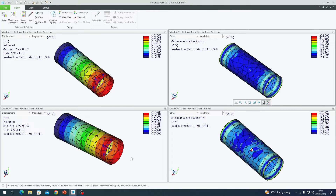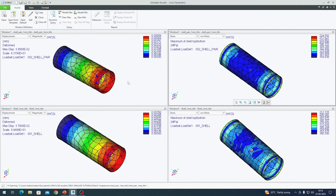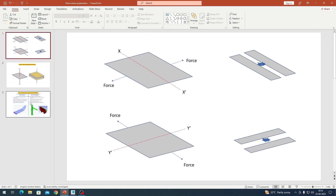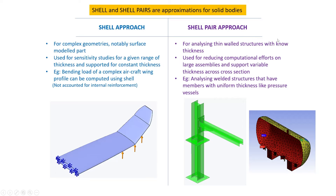These are two different ways to idealize a mesh into a shell or shell pair, depending on your initial conditions. Let me show a comparison using a presentation. The shell approach suits complex geometry or surface models where you want to test sensitivity to different thickness values. The shell pair approach is for models with a defined thickness where you want to reduce computation time by avoiding solid elements — commonly used for welded structures and pressure vessels, which have defined wall thickness and are thin-walled structures.